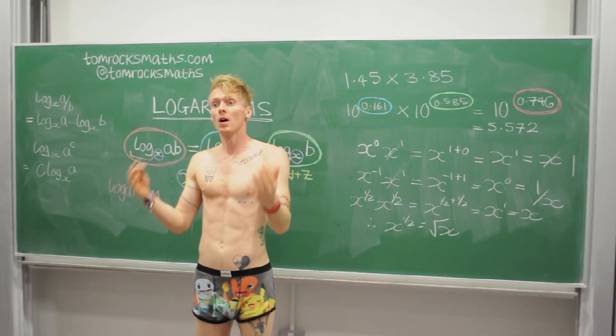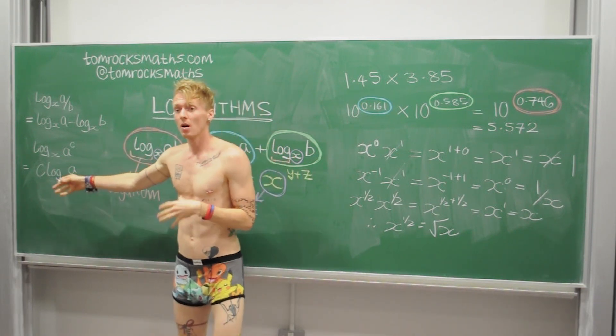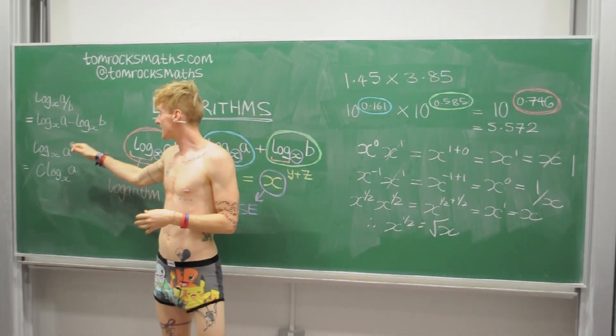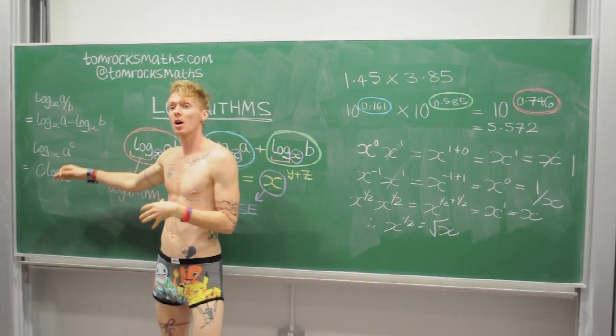Another property of logs, which is perhaps the most useful, is this one, which says that the log of A to the power C is the same as C lots of log of A. And this is incredibly useful when working out square roots, cube roots and higher order roots of numbers.